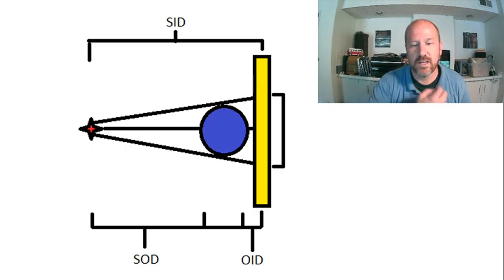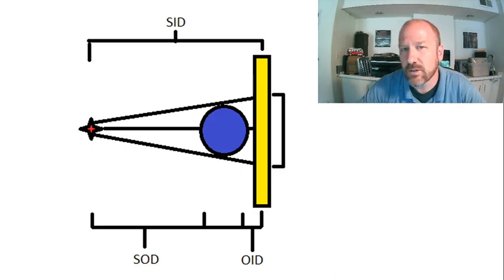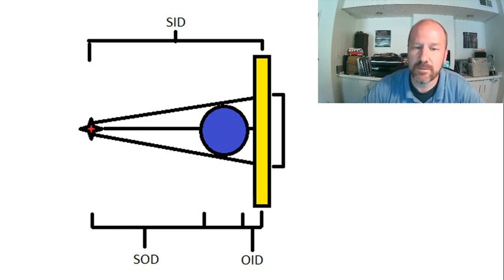So what we're talking about when we talk about SID, SOD, and OID are geometrical factors in x-ray image production. And so as this image here depicts, we've got an object, that blue ball. We have a source of x-rays, that red star, and the image receptor is the thing in yellow.